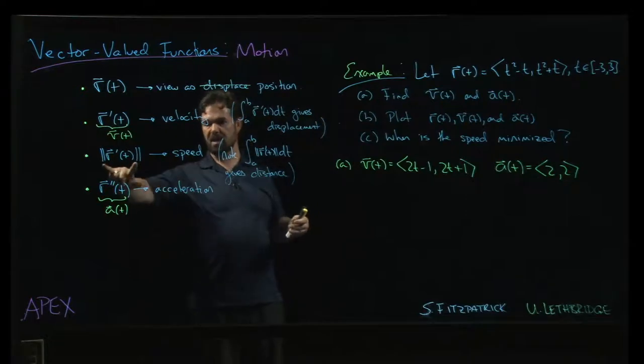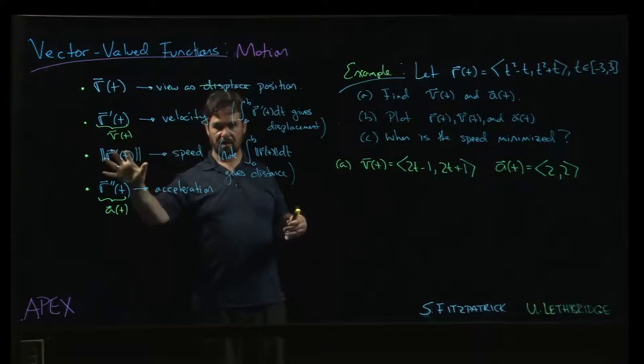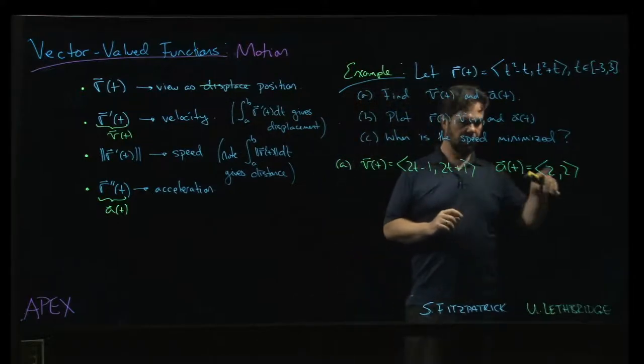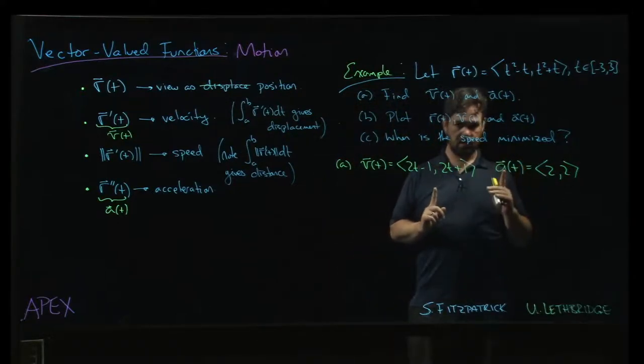So then you're worried. But remember, the speed is a scalar quantity. It's the magnitude of the velocity. And so throwing that magnitude in there, that square root and everything, that's going to change the game for us. We'll see there is going to be a minimum of speed.